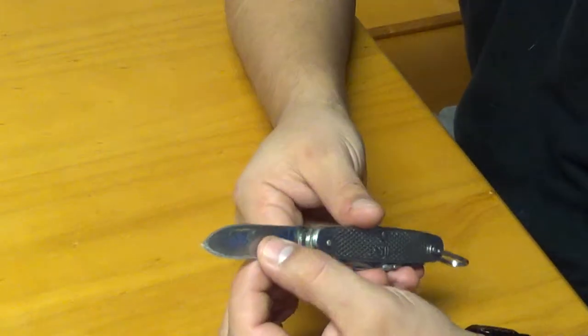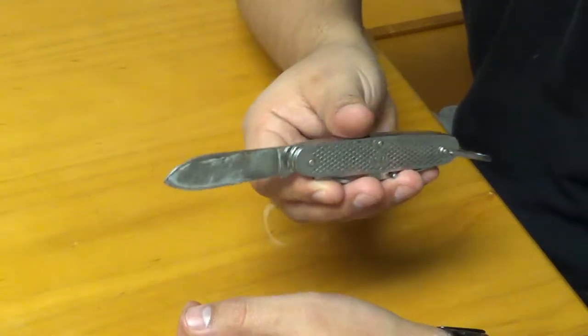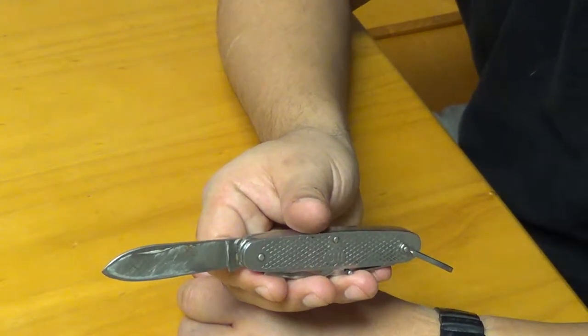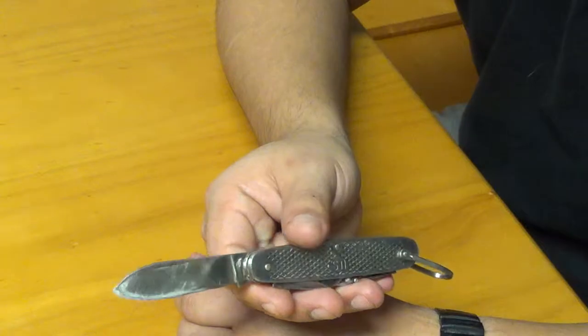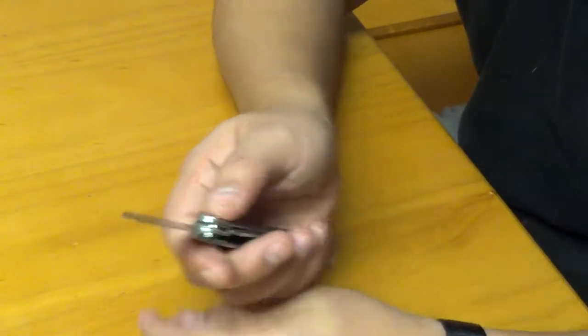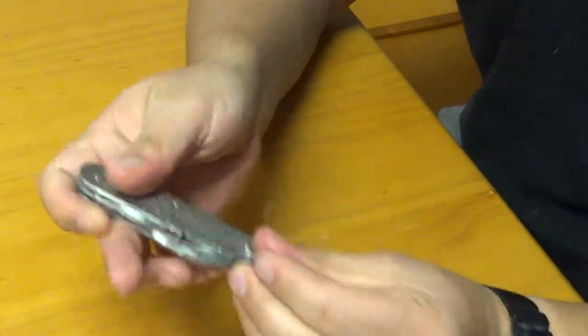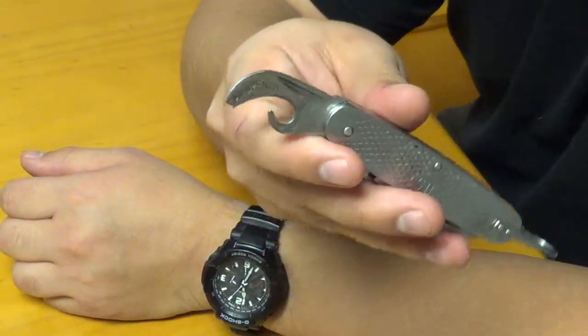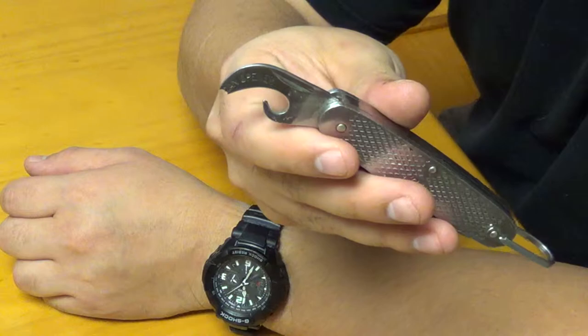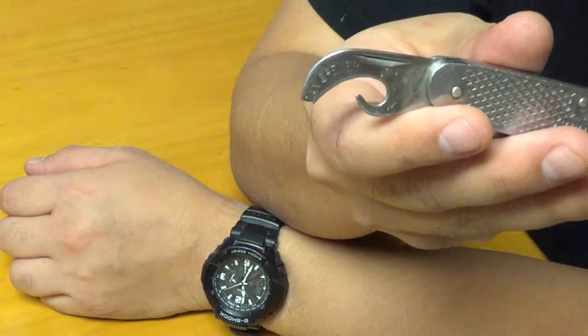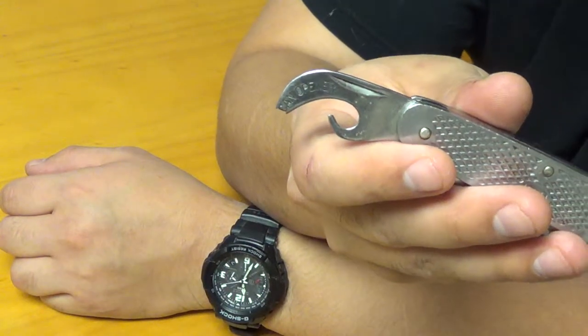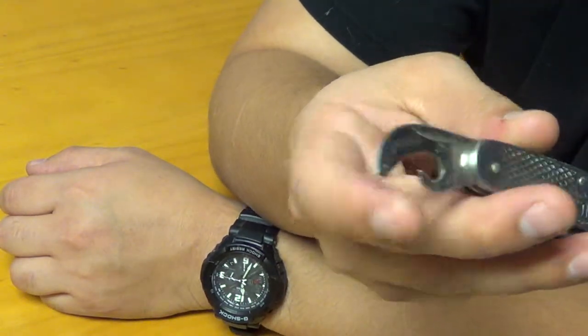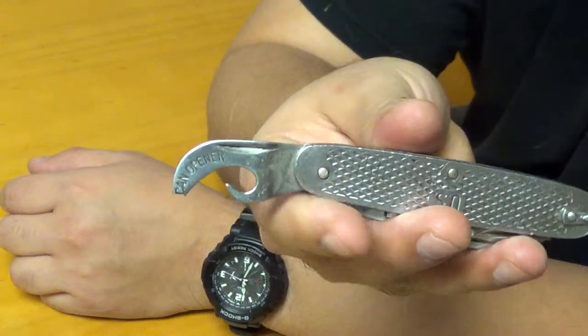The knife has a main blade, which is very nice. The edge retention isn't all that great, but it does retouch up very easily. Very serviceable blade. It has a can opener. It says can opener on it if you can't figure out what that is. The tip on this one is broken. It is a very old knife.